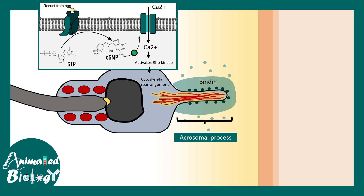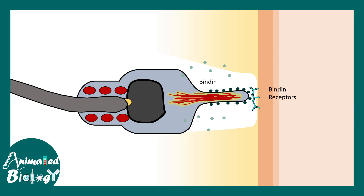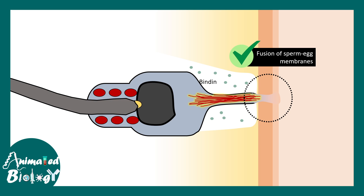On the outside of the acrosomal process there is a molecule called bindin, which eventually binds to the bindin receptor on the egg membrane. This bindin–bindin receptor interaction is highly species-specific. Once the bindin receptor is bound, membrane fusion is initiated, and the cytoplasm of the sperm becomes continuous with the cytoplasm of the ovum. The actin creates a narrow passageway through which the nucleus moves into the egg cytoplasm.